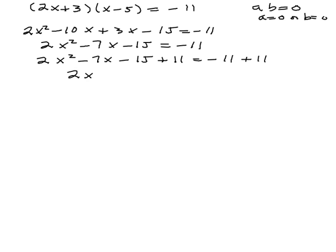So finally we have the 0 on one side. 2x squared minus 7x minus 4 equals 0.